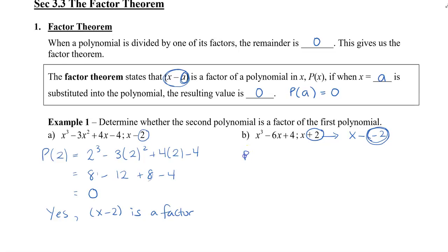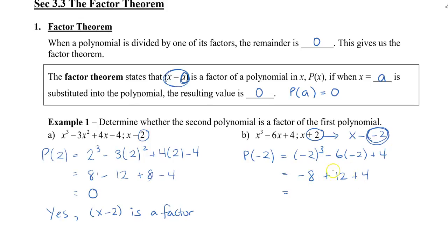So we're going to plug negative 2 into our first polynomial. We get negative 2 cubed, which is negative 8. Negative 6 times negative 2 is positive 12, and positive 4. We can see that negative 8 doesn't balance the positive 12 and positive 4, which is 16 — so this gives us 8. So this one is no: x plus 2 is not a factor.